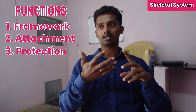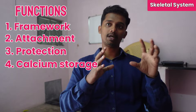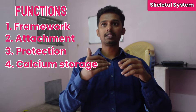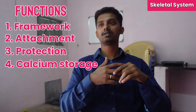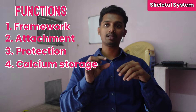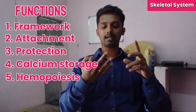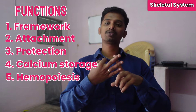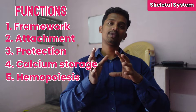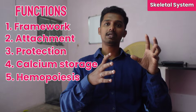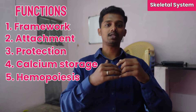The fourth function is that the bones are the site of storage of calcium and calcium phosphate — minerals are stored in the bone and can be released when needed by the body. The fifth function is hematopoiesis: bone marrow is present inside the bones and is responsible for the production of blood cells — RBCs, WBCs, and platelets. These three types of blood cells are produced and matured in the bone marrow.